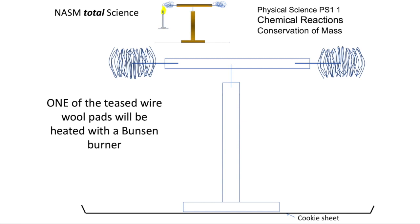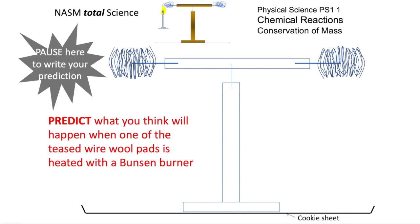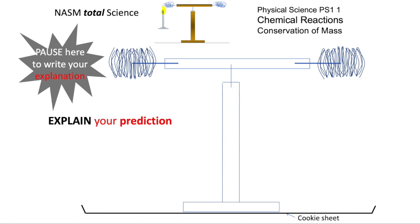Tease the pads slightly, rather than having them tightly packed, and only one of them is going to be heated with a Bunsen burner. Now, pause the video so you can predict what you think will happen, and everything that you think will happen, and then pause again to explain what you just predicted. Why did you make those predictions?